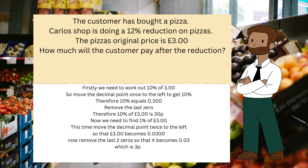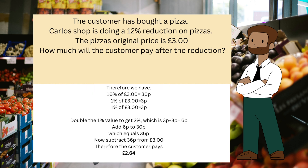Now we need to find 1 percent of three pounds. This time you move the decimal point twice to the left so that three pounds becomes 0.0300. Now remove the last two zeros so that it becomes 0.03, which in money is three pence. Therefore, 10 percent of three pounds is 30 pence, and 1 percent of three pounds is three pence.